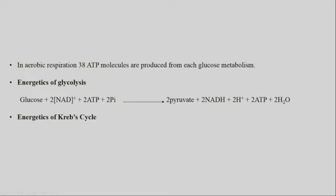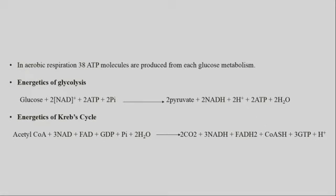In Krebs cycle, the end products are 3NADH, FADH2, and GTP, which is also converted to ATP during respiration.